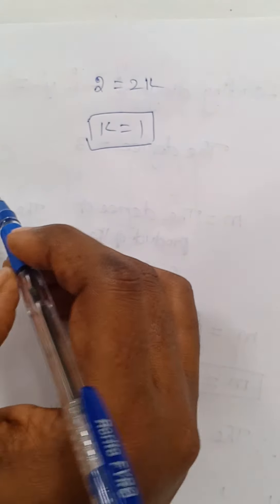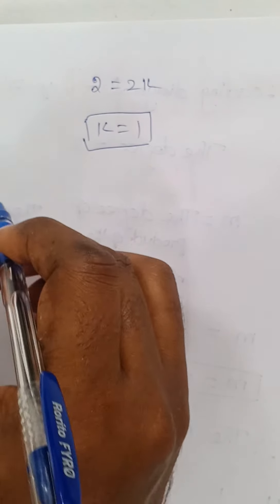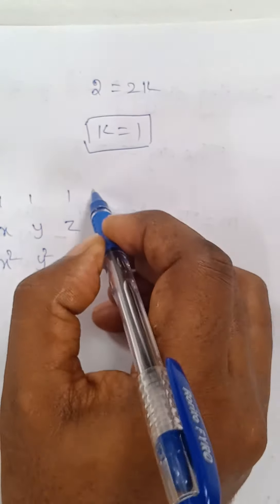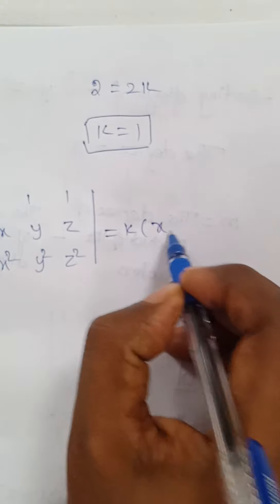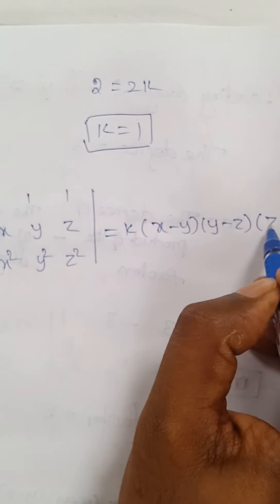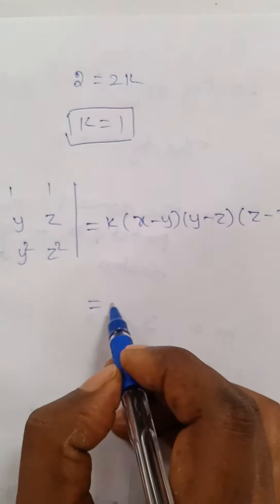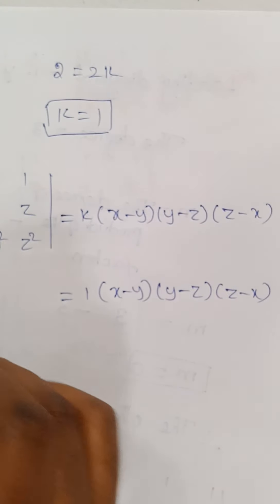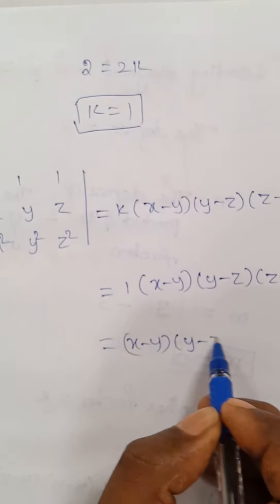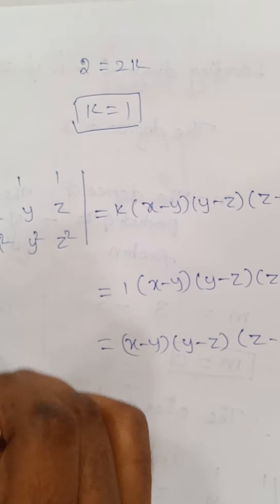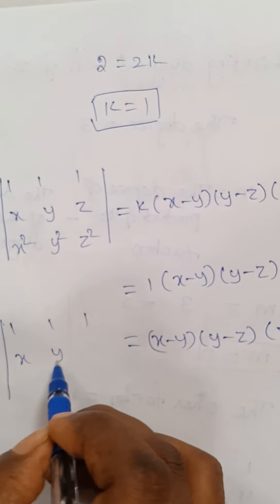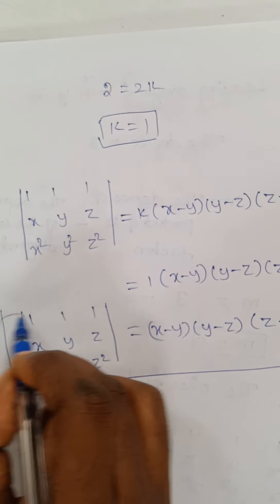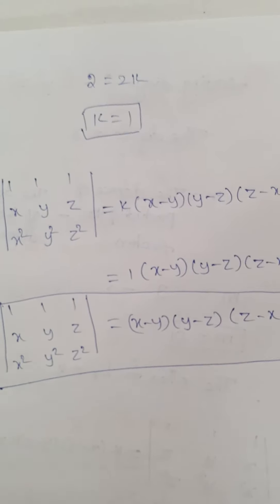From 2 equal to 2k, we get k equal to 1. Substituting k equal to 1 back into the equation, the determinant of the matrix [1,1,1; x,y,z; x²,y²,z²] equals 1·(x−y)(y−z)(z−x), which simplifies to (x−y)(y−z)(z−x). This is the answer for Question Number 6. Thank you.